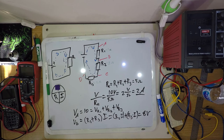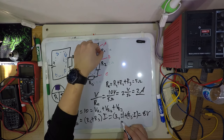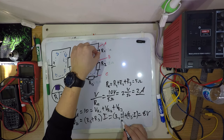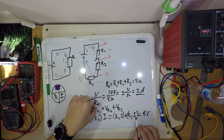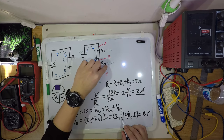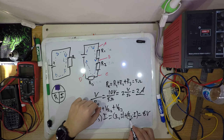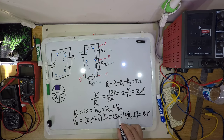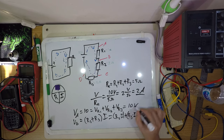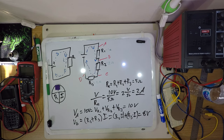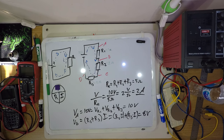You see how this is starting to make sense? You have your current: I times R1 gives 2 amps times 1 equals 2 volts. I times R2 gives 2 amps times 2 equals 4 volts. I times R3 gives 2 amps times 2 equals 4 volts. So 2 plus 4 plus 4 equals 10 volts. That is what it means to be in series — all the current that flows through one also flows through the others.